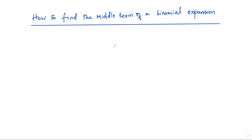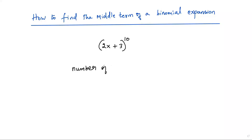Now let's see how to find the middle term of a binomial expansion. Consider the binomial (2x + 3) to the power of 10. Which term is the middle term in the expansion of this binomial? To find the middle term, first we have to find the number of terms in the expansion. The exponent is 10, so the number of terms will be n plus one, which is 11. So we have 11 terms in the expansion of this binomial.